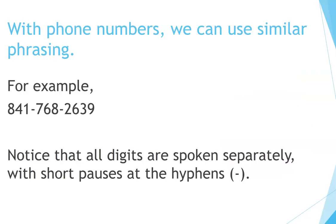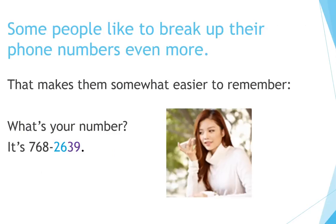With phone numbers, we can use similar phrasing. For example, 841-768-2639 — notice that all digits are spoken separately with short pauses at the hyphens. Some people like to break up their phone numbers even more to make them easier to remember: '768-2639.'